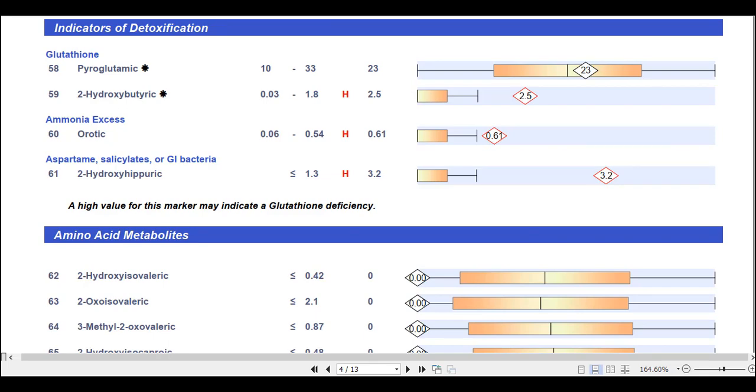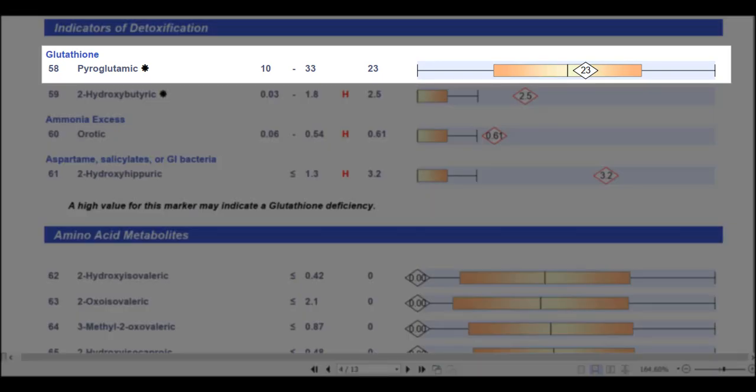Under the section Indicators of Detoxification, there are four markers. Pyroglutamic acid is a metabolite of glutathione, and if this marker is elevated, this usually is indicative of a glutathione deficiency, although in some cases it can result from a genetic disorder, metabolic effects of certain antibiotics, or intake of certain infant formulas.